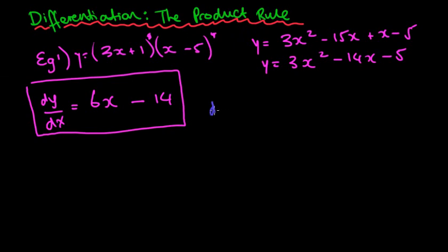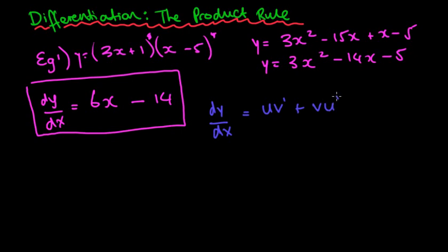The product rule looks like this: dy/dx is equal to u·v' plus v·u'.